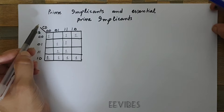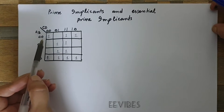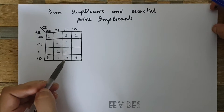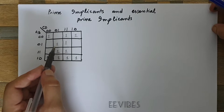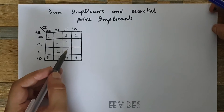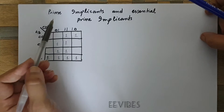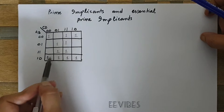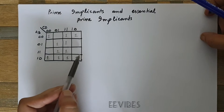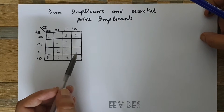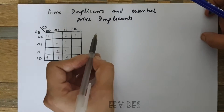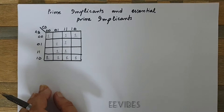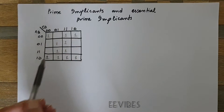We'll use a simple example of a four-variable K-map where the minterms have already been placed. The purpose is to obtain a simplified boolean expression consisting of the minimum number of possible literals.